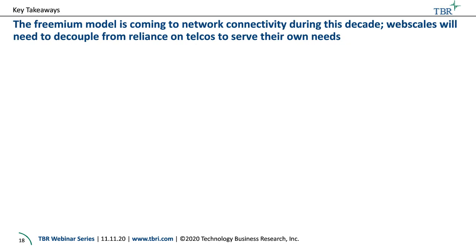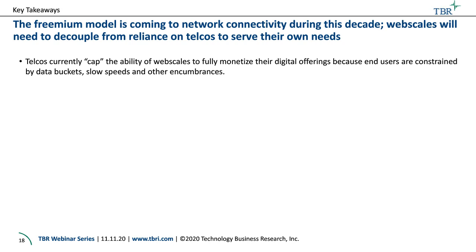The freemium model is coming to the network connectivity domain this decade, and we gave tangible examples that this has already started. Web scales are going to need to decouple from reliance on telcos to serve their own needs. We showed how each era saw web scales take more control of their own destiny — buying more infrastructure, building it out themselves, owning optical transport grids, their cloud businesses. Now they're getting into mobile core and other areas. We have pointers to where this could be going in the future. And my last slide is what the telcos can do about this — then we'll open up for Q&A.